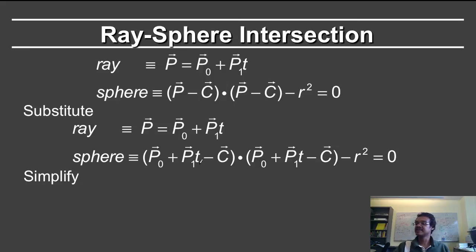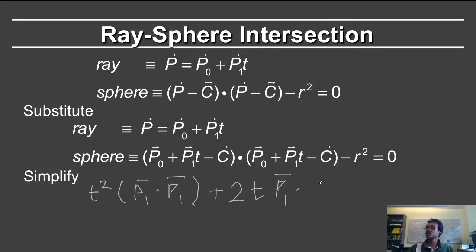Simplifying, we'll see that the t terms will give you t squared here. And so you have t squared. That gets multiplied by p1 dot product with p1. Then we have the t terms. So p1 into p0 minus c, dot product with p0 minus c, p0 minus c dot product with p1. And so we'll have the t terms, p1, which will take a dot product with p0 minus c. Then we have the constant term, which is p0 minus c dot product with itself minus r squared is equal to 0.